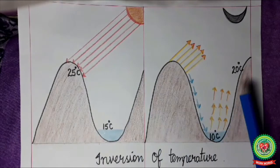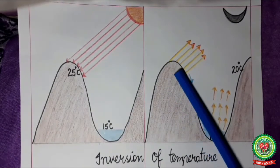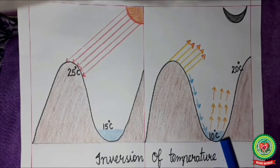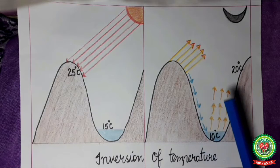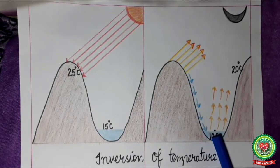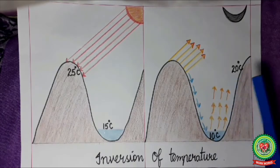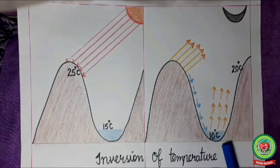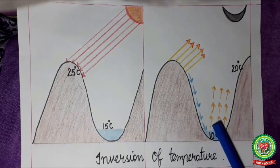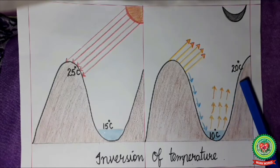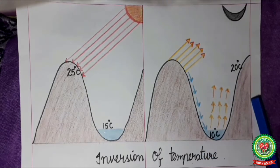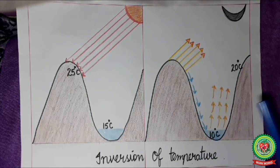At night, the mountain top releases heat quickly while the valley cools down slowly. The cold air from the mountain sinks towards the valley and pushes the warm air from the valley to rise up. Due to this cold air sinking, the valley temperature decreases — for example, to 10 degrees Celsius — while the rising warm air makes the mountain temperature higher, for example 20 degrees Celsius. In this case also we can see inversion of temperature: temperature increases instead of decreasing with height.